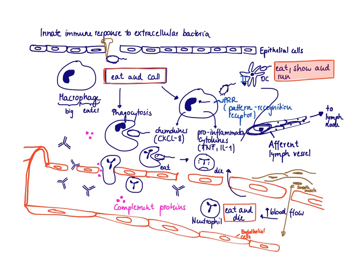The cell that's going to help to do so is the dendritic cell. We talked about the dendritic cell in a previous video, and we gave it the slogan, Eat, Show, and Run, because it's one of these guards that just eats up everything that it can find, shows it via MHC class 2.